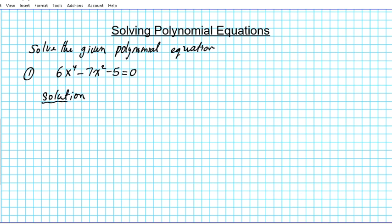Now the first thing we're going to do is inspect all the terms of this polynomial equation and see if there is a greatest common factor that can be factored out. So if you look at all these three terms 6x^4, 7x^2 and 5, you can clearly see that there are no common factors to be factored out.